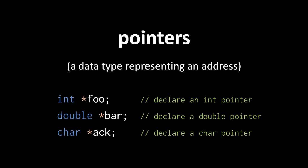The asterisk of a pointer declaration need not be written adjacent to the variable name. Whitespace after the asterisk is permitted, and whitespace before the asterisk is only optional. However, for reasons that will become clear later, this is the preferred style.